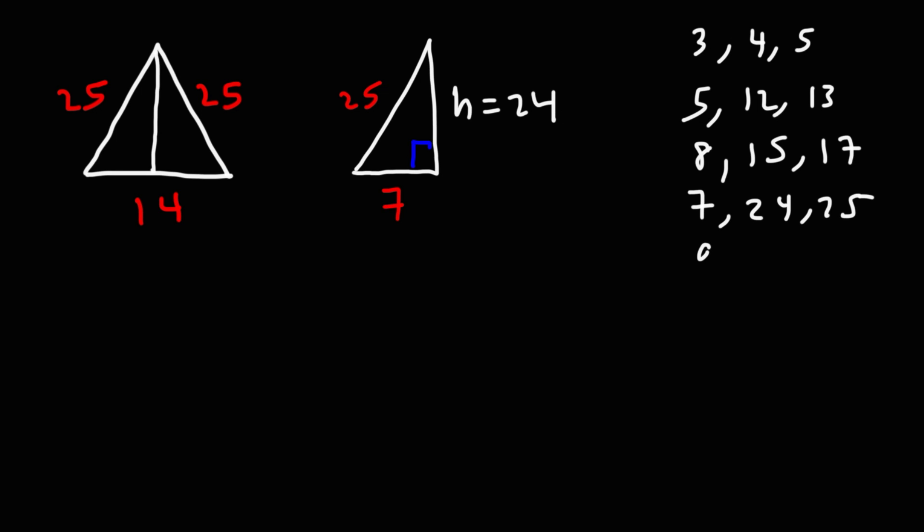Now, there's some other ones, like the 9, 40, 41. And I believe 11, 60, 61. Let me make sure that's correct. And it is. So, for the most part, you'll have one of those 6 variants, or any multiple of them. So, for instance, if you multiply this by 2, you can have the 6, 8, 10 triangle. Or if you multiply it by 3, the 9, 12, 15 triangle. So, any multiples of those numbers will work as well. So, like this one, if you multiply it by 2, you have the 10, 24, 26 triangle.